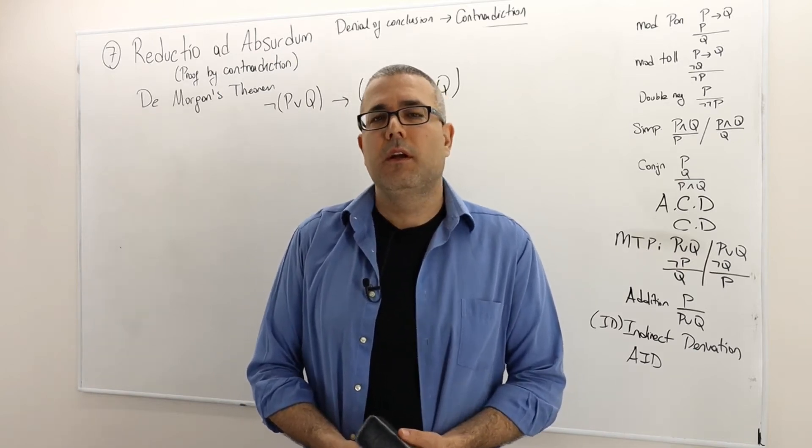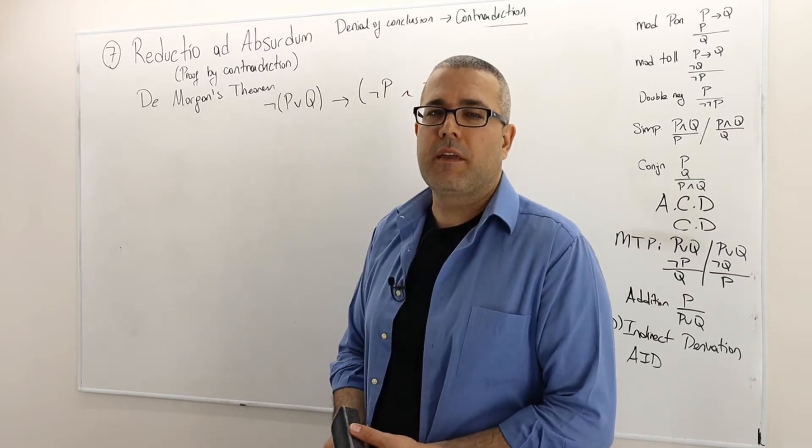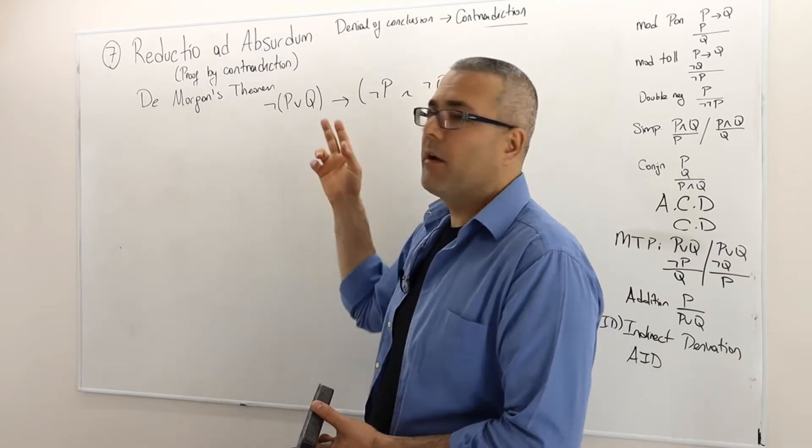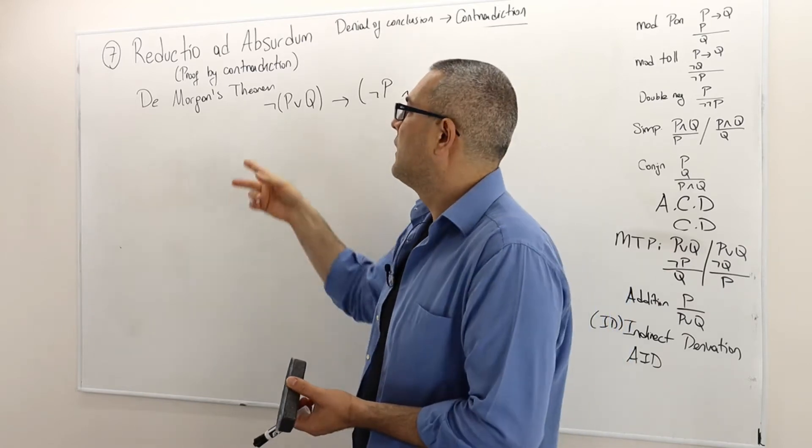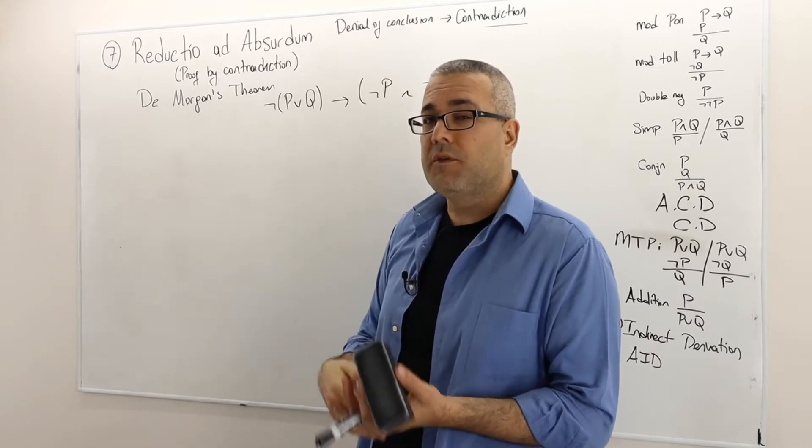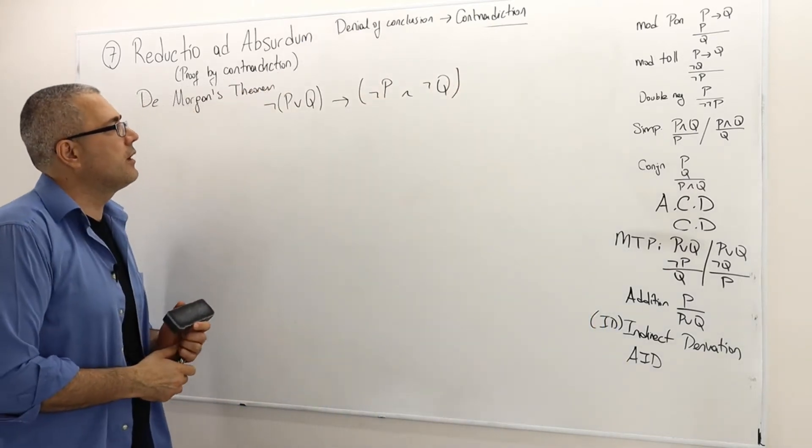Let's look at an example and use our indirect derivation method. So this theorem is an argument with no premise. It is also called De Morgan's theorem, so it's slightly more complicated than the previous arguments that we had.